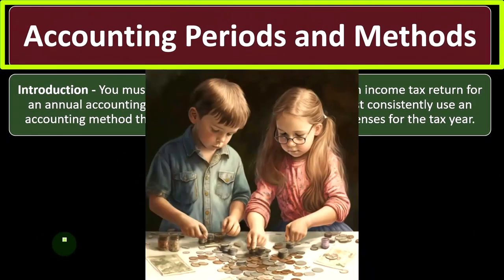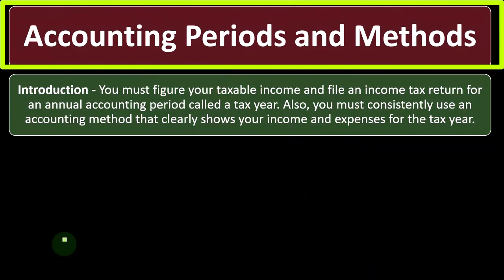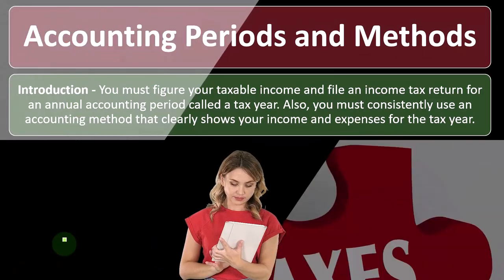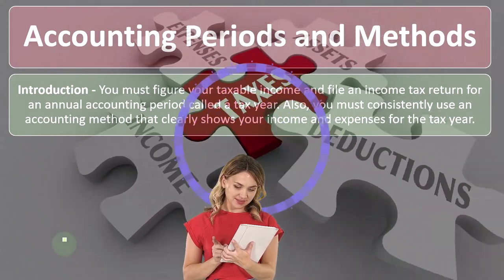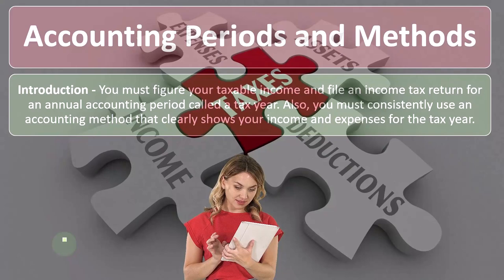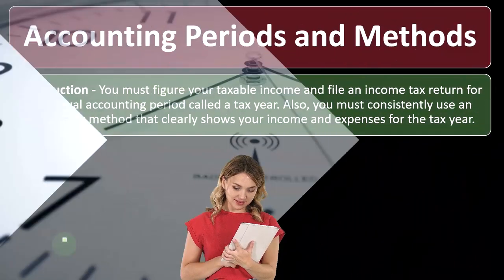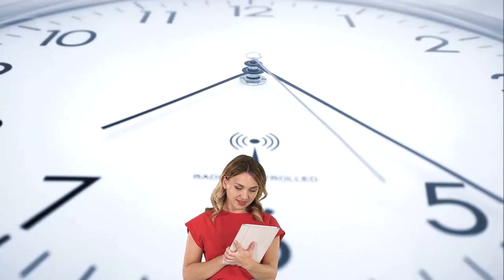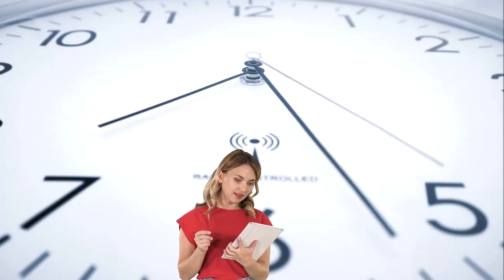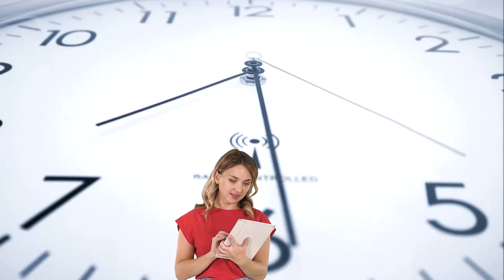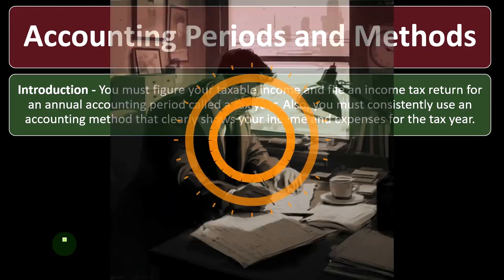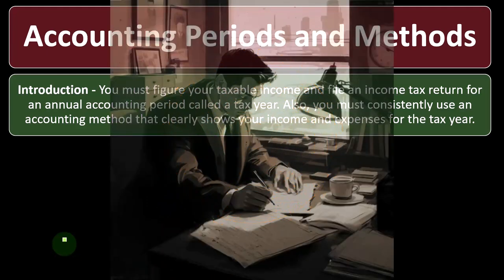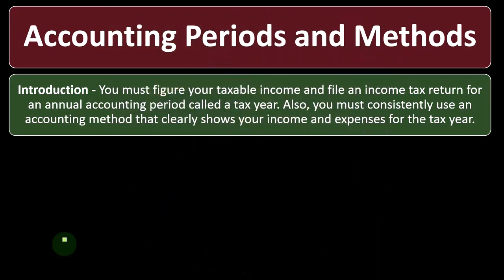Let's talk about accounting periods and methods. You must figure your taxable income and file an income tax return for an annual accounting period called a tax year. We're thinking about the time frame — income taxes typically require a 12-month time frame. When we get into the methods, we talk about the two major ones: the accrual method and the cash-based method. We also ask whether there could be a hybrid between the two methods.